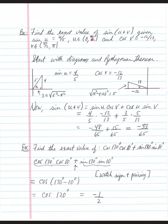Sine(u): u is in the first quadrant, so draw an angle there. Sine is opposite over hypotenuse, so we have 4 and 5. Using the Pythagorean theorem: 5² − 4² = 25 − 16 = 9, square root is 3, so the adjacent side is 3. For cosine(v) = −12/13: sketch a right triangle in quadrant 2, label angle v. Cosine is adjacent over hypotenuse: −12/13. Use the Pythagorean theorem to find the third side.